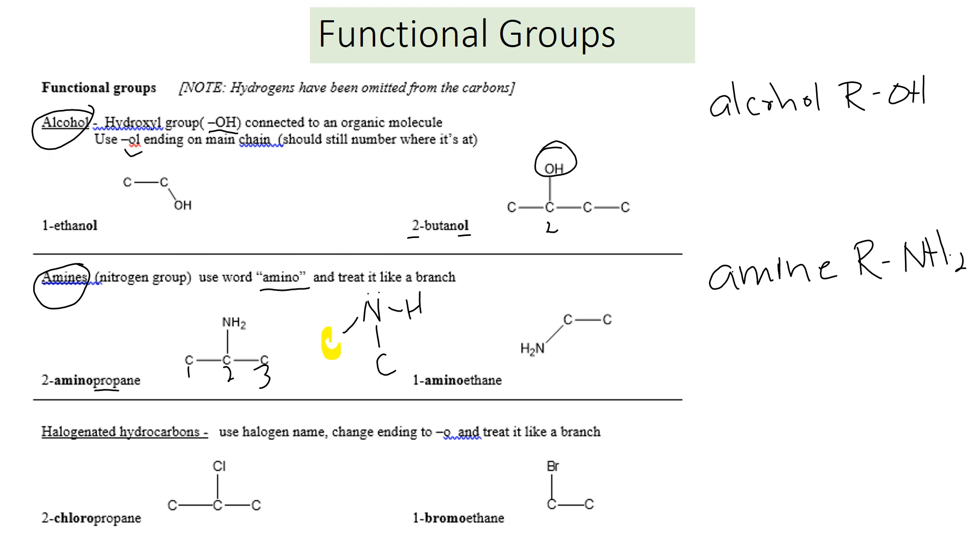Halogenated hydrocarbons are when a halogen is added. They're named by changing the ending to O. You can see 2-chloropropane. Propane: one, two, three carbons. You have a chlorine on carbon number two. That's 2-chloropropane.